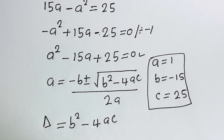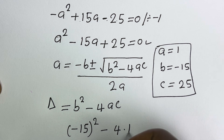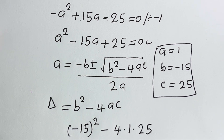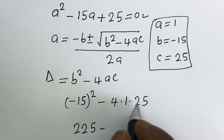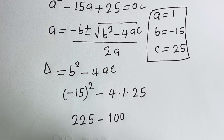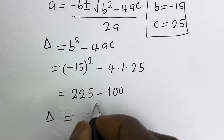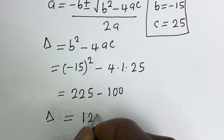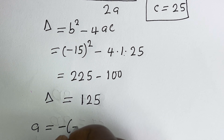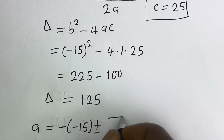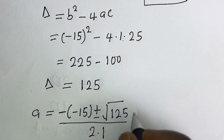The discriminant D equals b squared minus 4ac. That is: (minus 15) squared minus 4 times 1 times 25, which equals 225 minus 100, giving D equals 125. So a equals (15 plus or minus square root of 125) over 2.